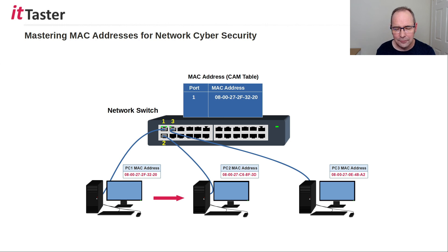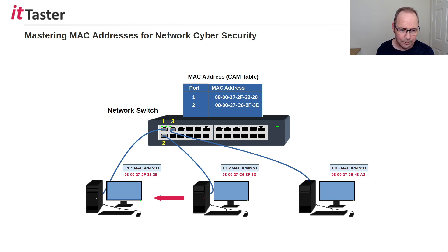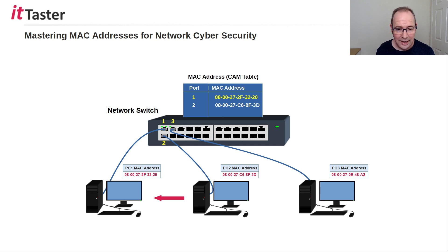When PC2 examines the frame and it matches its MAC address, it replies to PC1 by sending a frame. The switch again examines the source MAC address of the frame sent from PC2, learns it, and stores it in its MAC address table. The switch needs to forward the frame from PC2, so it checks its MAC address table for the destination MAC address. This time there is an entry, and the frame is sent out of port 1.